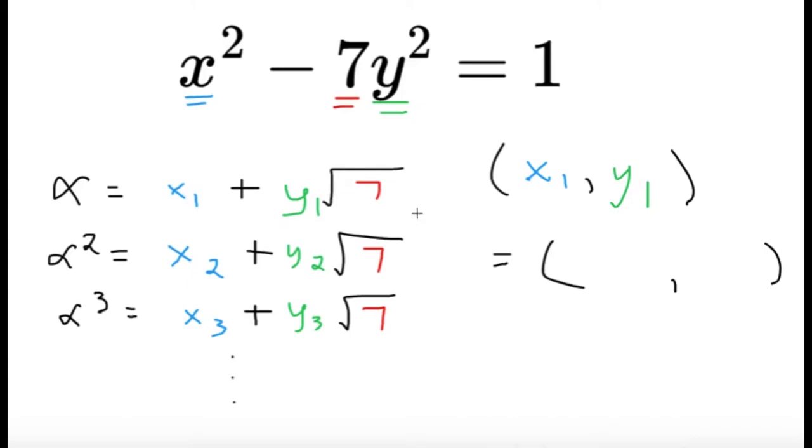If we take powers of alpha, we'll be able to produce or generate other solutions to this equation. In fact, if I square alpha or raise alpha to the second power and simplify into the form x sub 2 plus y sub 2 square root of 7, then x sub 2 comma y sub 2 will be a solution.